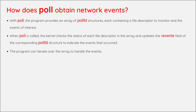How does POLL obtain network events? With POLL, the program provides an array of pollfd structures, each containing a file descriptor to monitor and the events of interest. When POLL is called, the kernel checks the status of each file descriptor in the array and updates the revents field of the corresponding pollfd structure to indicate the events that occurred. The program can then iterate over the array to handle the events.